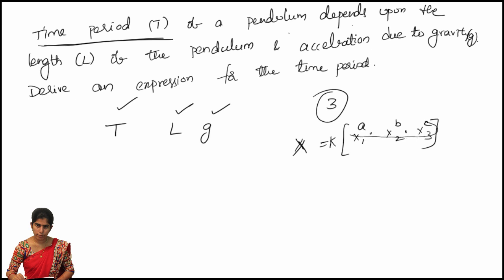Here A, B, C are arbitrary constants, and X1, X2, X3 are independent variables, while X is the dependent variable. Comparing this equation with our problem: in place of X we have time period T, and in place of independent variables we have length L and G. So the equation becomes: T is equal to constant K multiplied by L power A multiplied by G power B.